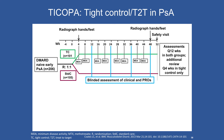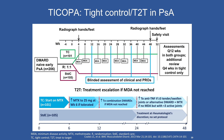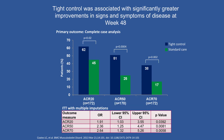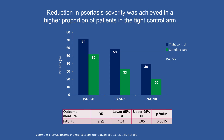The more traditional treat-to-target approach is the TICOPA study, which compared usual standard care versus tight control — where at every 12 weeks you must reach a defined target. The bar graphs show that in the tight control group, there were significantly greater improvements in both signs and symptoms of disease as well as in psoriasis, benefiting both skin and joints.